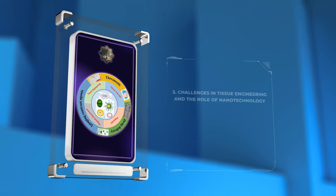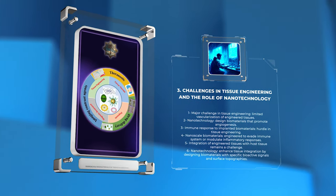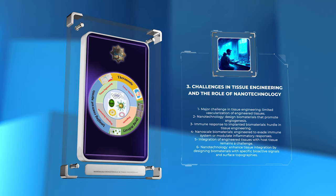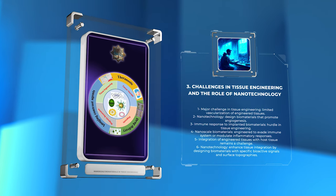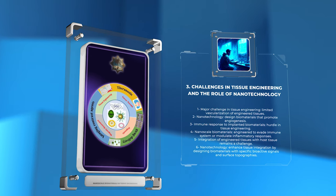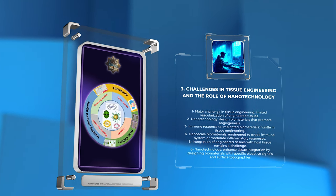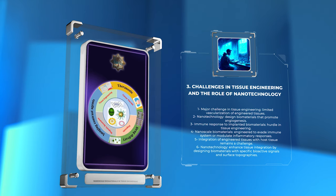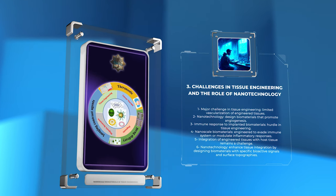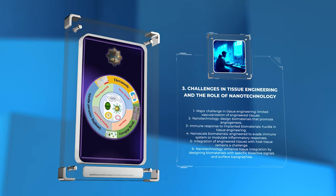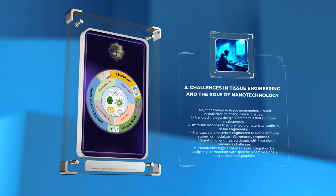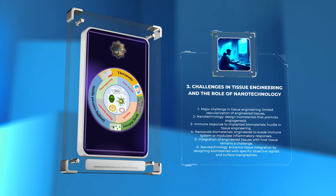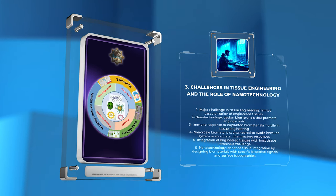Despite significant progress in tissue engineering, several challenges persist. One major challenge is the limited vascularization of engineered tissues, leading to inadequate nutrient delivery and waste removal. Nanotechnology can help address this challenge by designing biomaterials that promote angiogenesis, the formation of new blood vessels. Additionally, the immune response to implanted biomaterials poses another hurdle in tissue engineering. Nanoscale biomaterials can be engineered to evade the immune system or modulate inflammatory responses through surface modifications. Furthermore, the integration of engineered tissues with the host tissue remains a challenge. Nanotechnology offers strategies for enhancing tissue integration by designing biomaterials with specific bioactive signals and surface topographies that mimic the natural tissue environment.